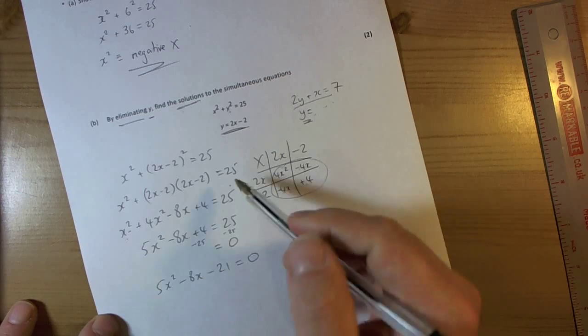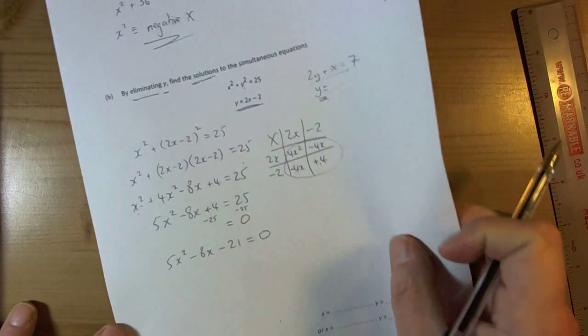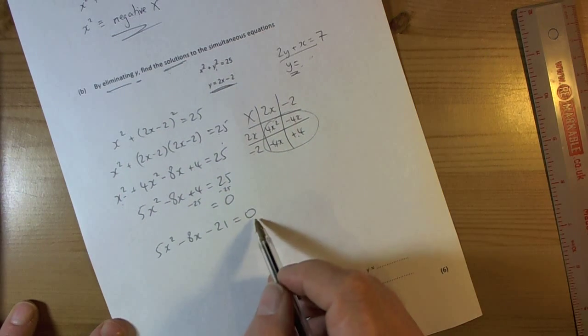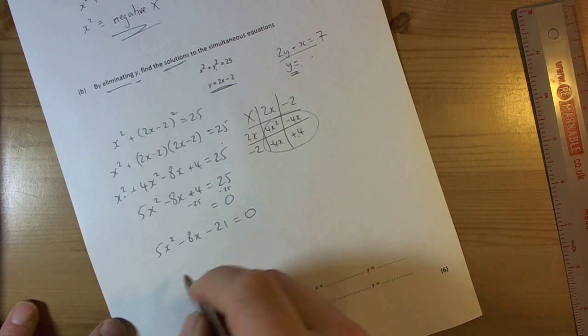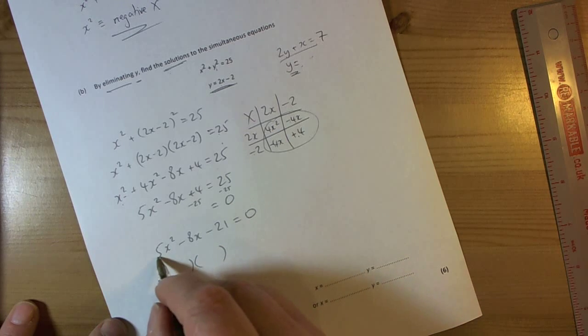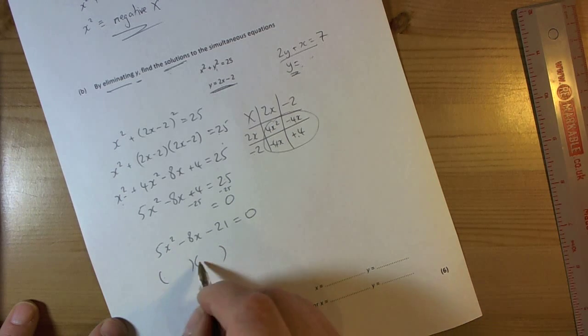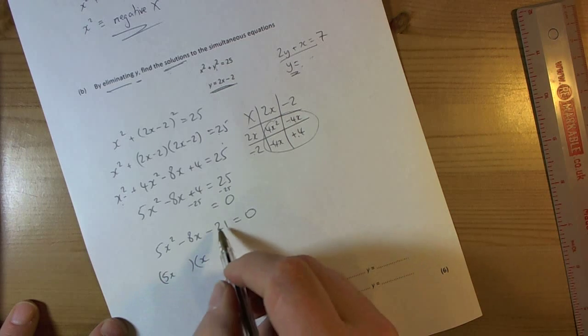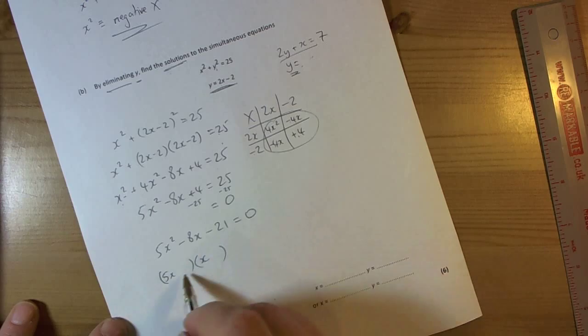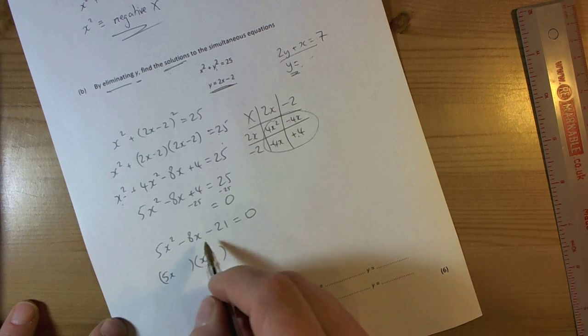This is on a non-calculator paper so therefore we look to see where this factorizes first, or then we complete the square. But it does factorize. So that means because there's no common factor it's going to be two brackets. We need to make 5x squared by multiplying the two fronts. So 5x times x. And the two end bits have got to make 21 and combine with this 5x and x to make negative 8x.